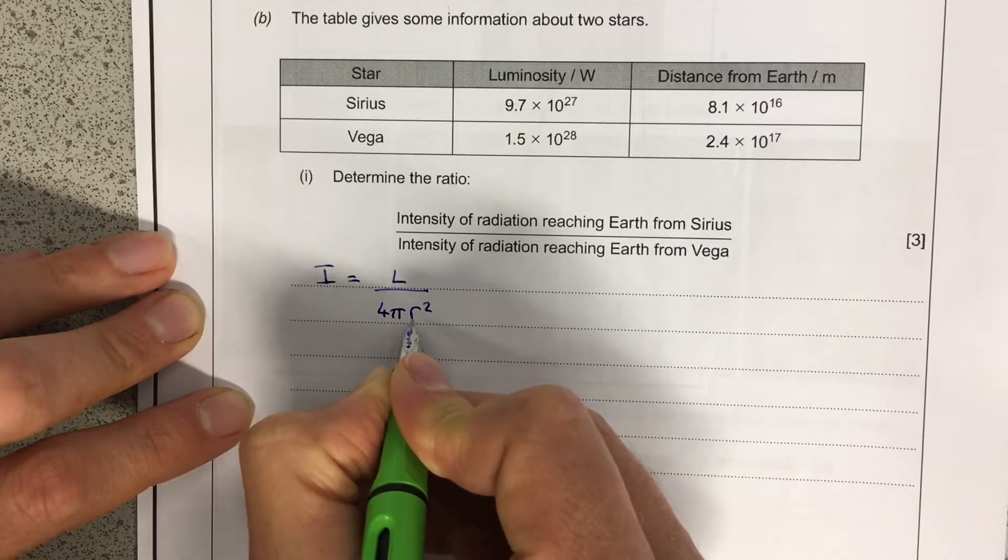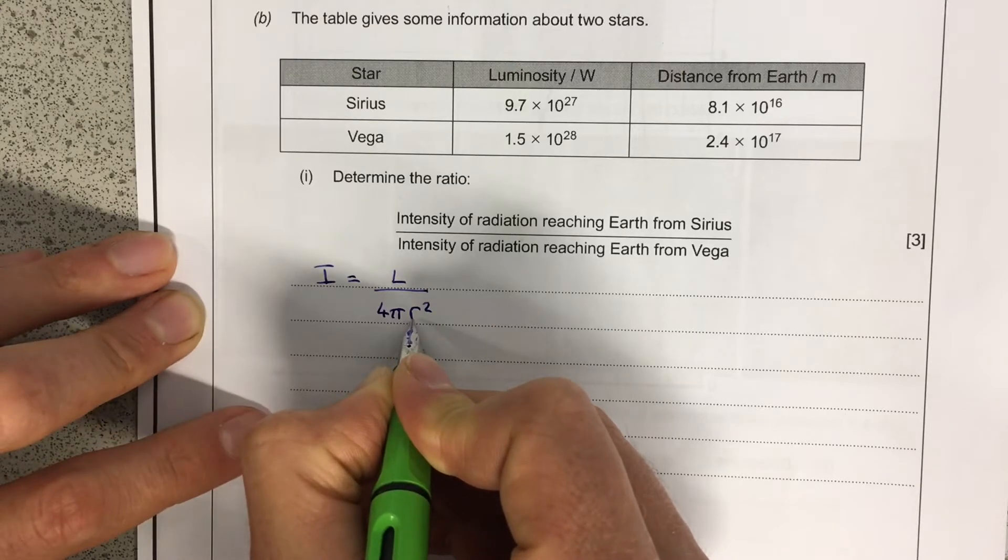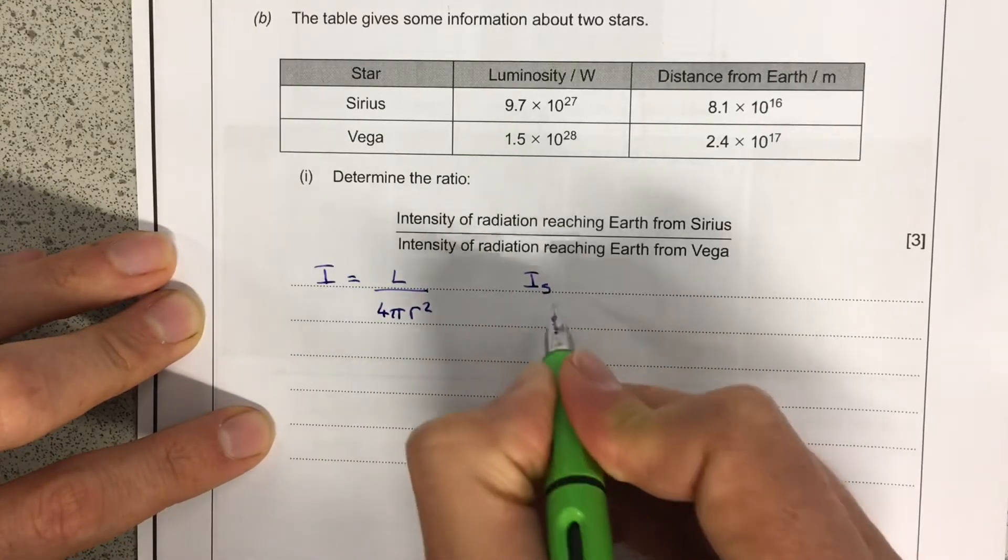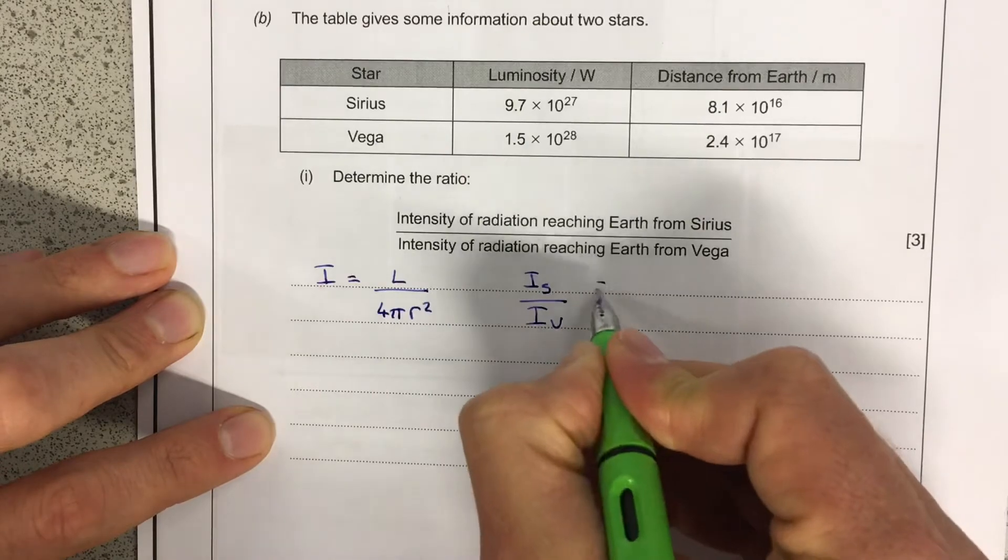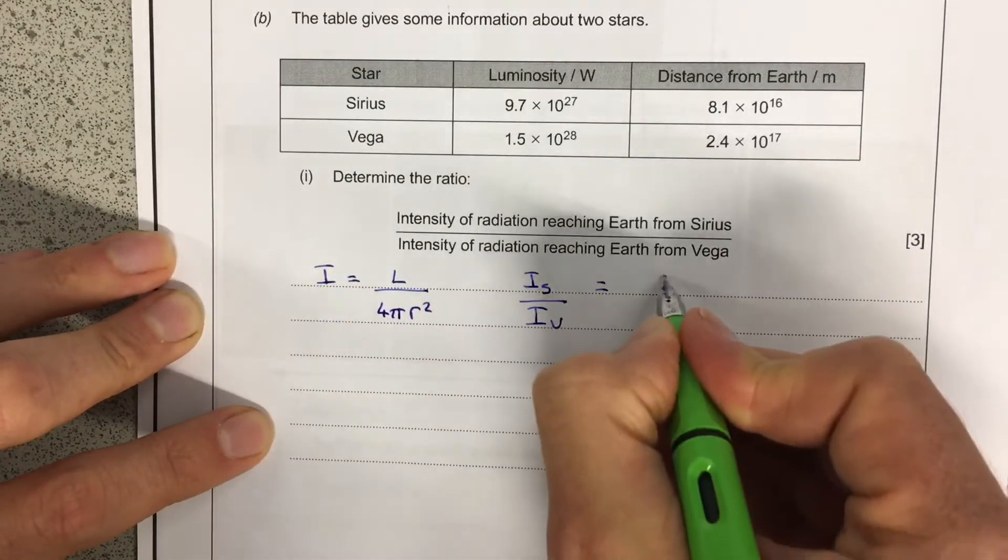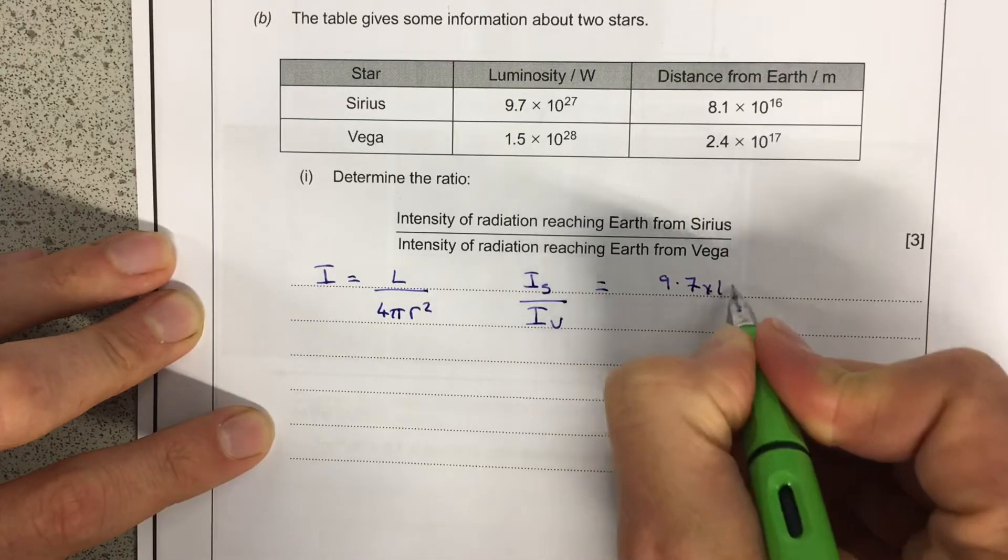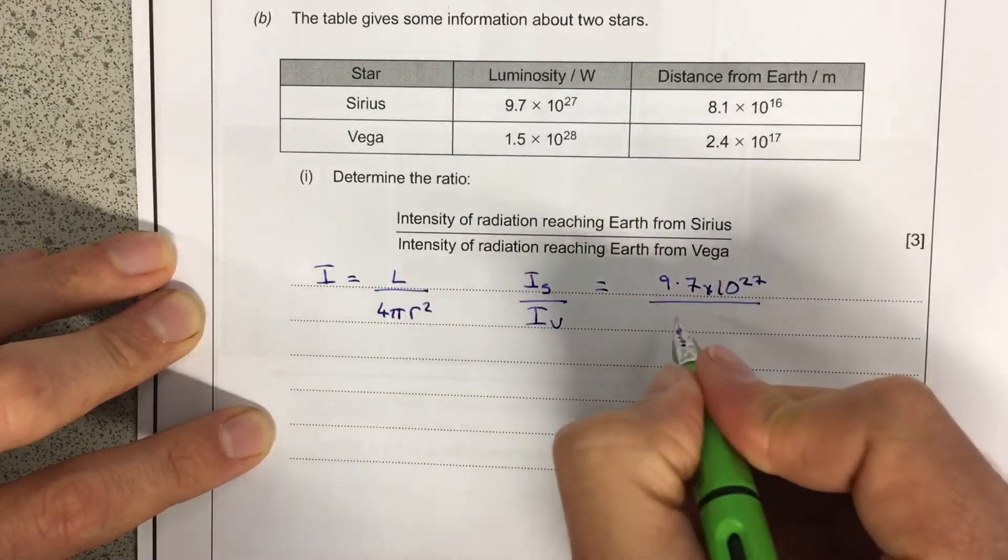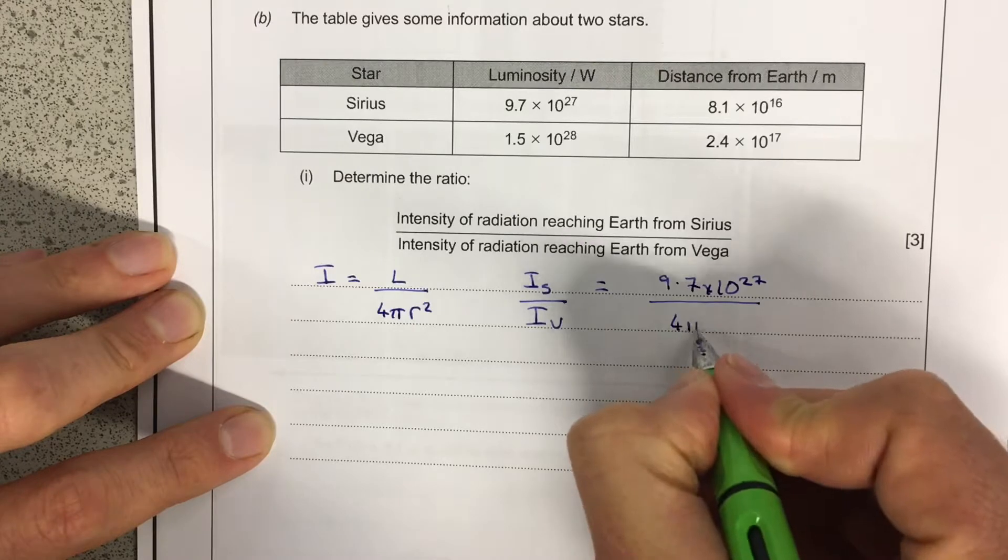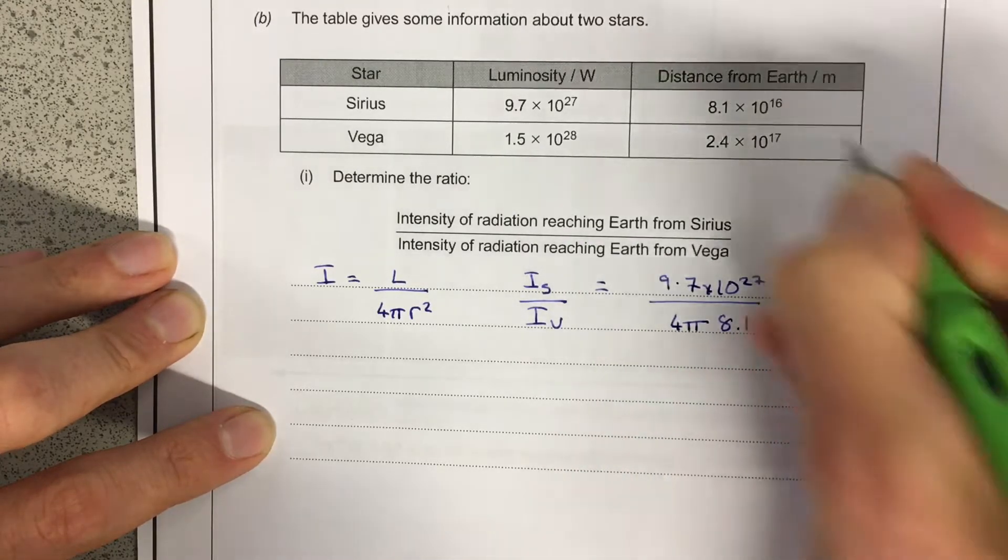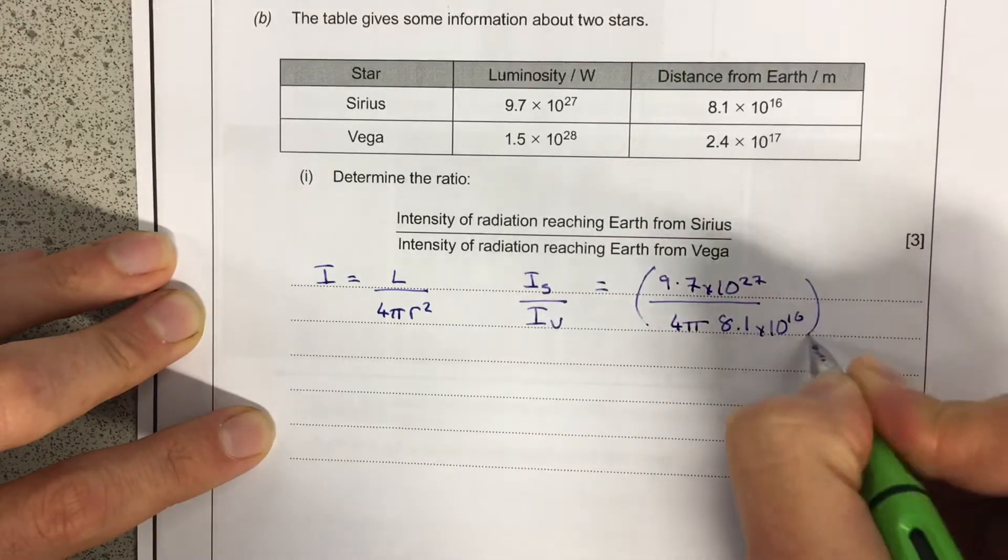So if I consider the intensity of Sirius over the intensity of Vega, that's going to be equal to this luminosity here, which is 9.7 times 10 to the 27 over the 4 pi 8.1 times 10 to the 16. So that's from up there. So that's my intensity for Sirius.